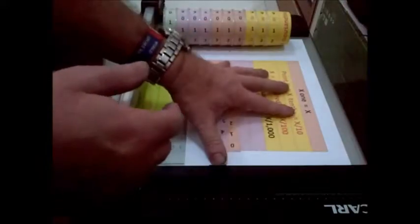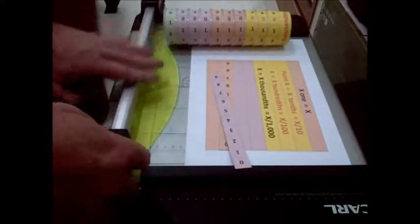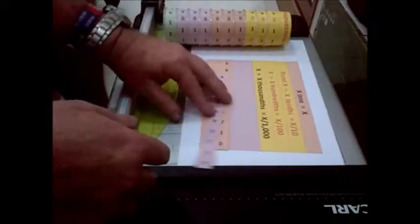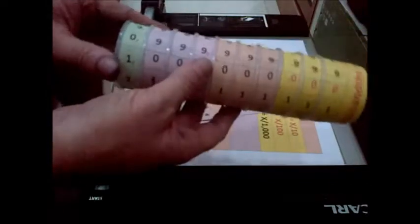Once we've printed off these numbers, it's just a case of running them through the guillotine and getting off these strips, which we can then wrap around. And if we have a look at our place value holders here, you can see they're quite, spin around quite easy,